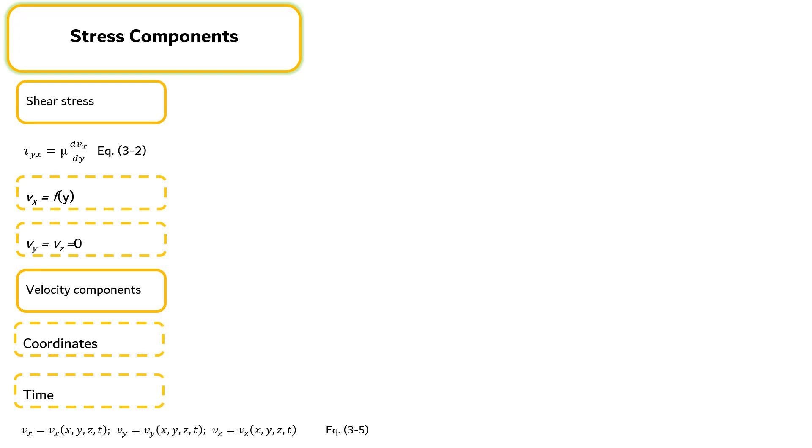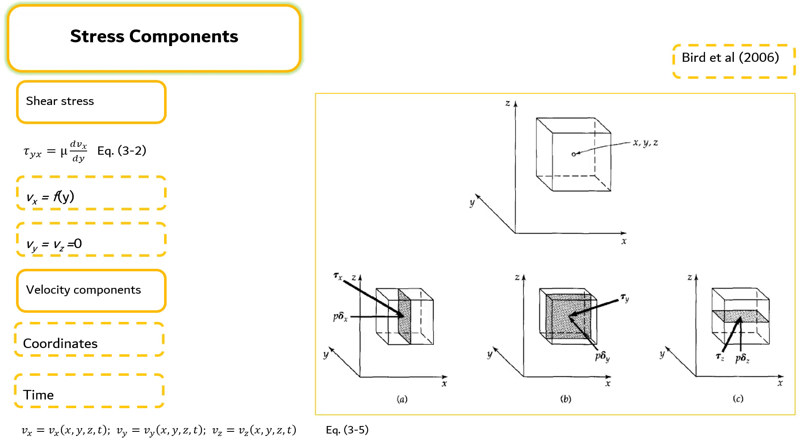In such a situation, there will be nine stress components, tau_ij. In order to define the stress components, let's consider a small cube-shaped volume element within the flow field, each face having unit area as shown in the right figure. The center of the volume element is at position x, y, z.